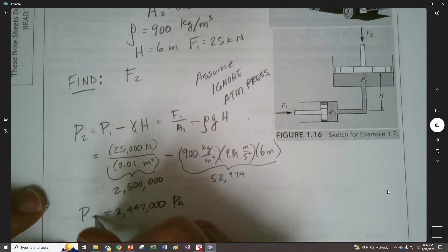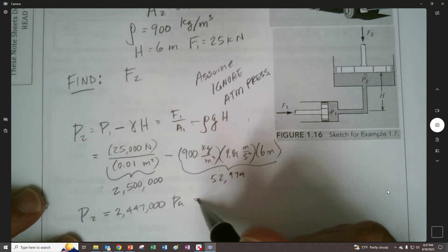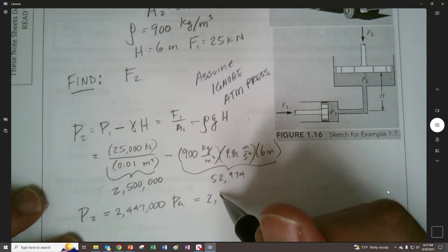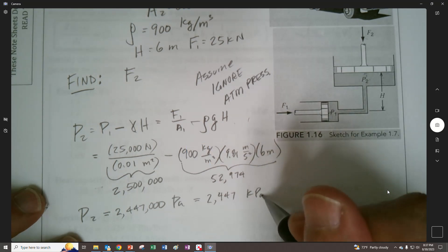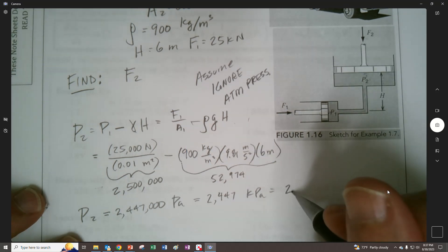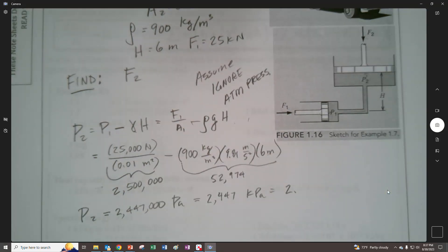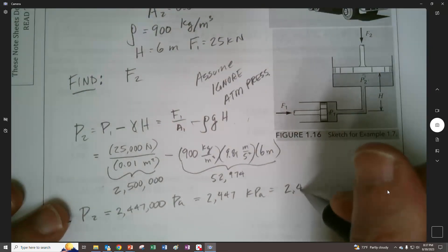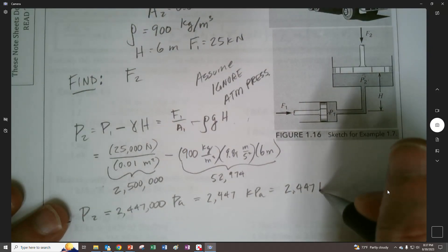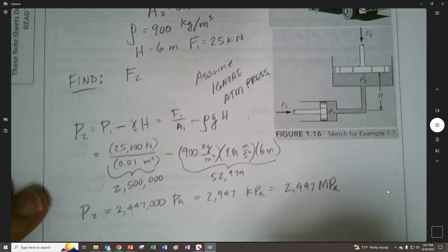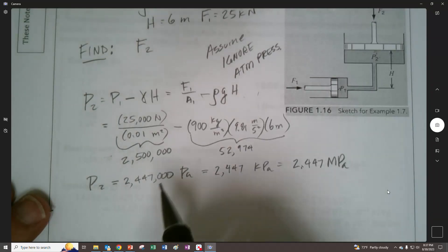Let's write this P2 over there, which is 2,447 kilopascals, but this is so large that maybe we're smart to go, let's see, 2.447 megapascals. If you're dealing with something that large, use those units.